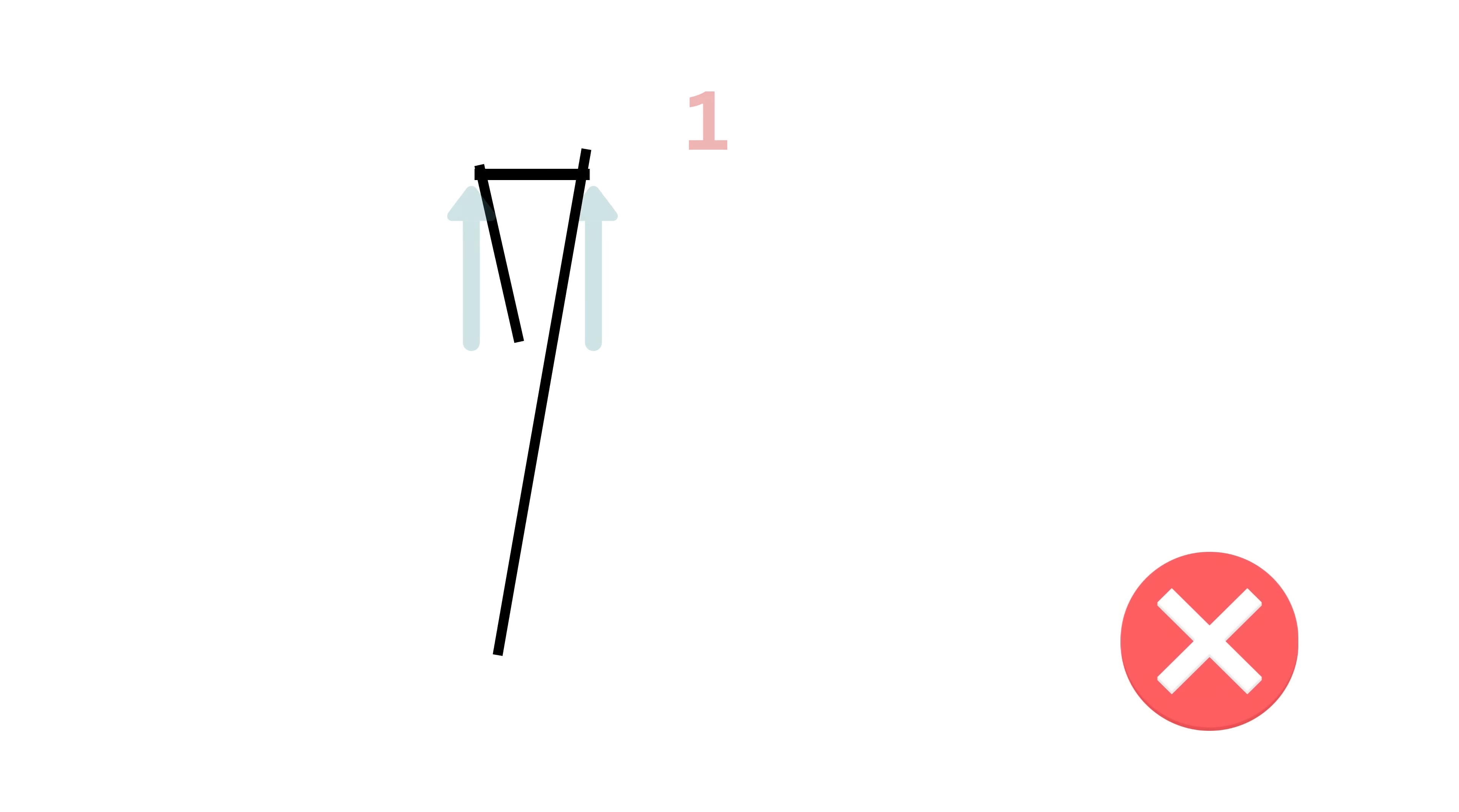But if the two cuts are like these, then we cannot form a triangle. Can you solve it? Okay, in order to solve this problem, let us call the left end of the stick as the origin.